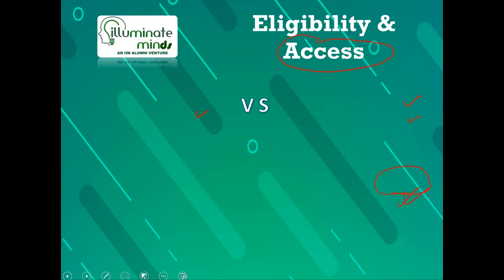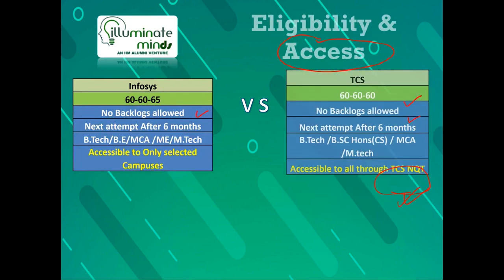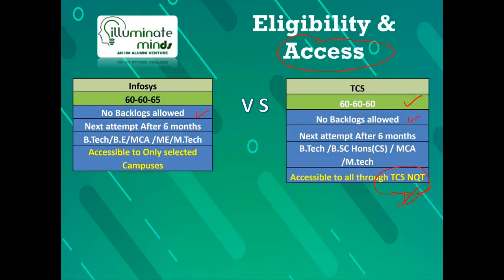The first point of discussion is eligibility and accessibility. For TCS, to write the TCS NQT — the national qualifying test — the eligibility is 60/60/60. That means in Class 10th you need 60 plus percent, in Class 12th you need 60 plus percent, and in B.Tech up to 6th semester you need 60 plus percent. Only if you meet this score will you be able to write the TCS NQT examination.